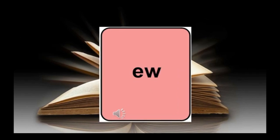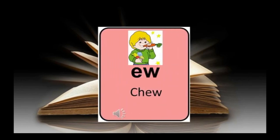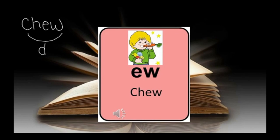The next sound we're going to look at is EW. EW, chew, OO. With this word chew, we're going to mark it as a double vowel and circle the EW. Remember, it does not always have to be two vowels — you can have a vowel that works with another letter to make one sound. In this case, EW.